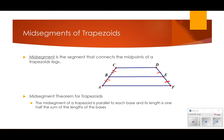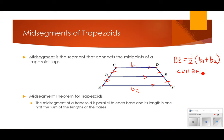They're not necessarily congruent to each other in the general case. The mid-segment of a trapezoid is parallel to each base, and its length is one-half the sum of the lengths of the bases. So if we call them B1 and B2, then BE equals one-half the sum of those bases, and BE is parallel to CD, which is parallel to AF.